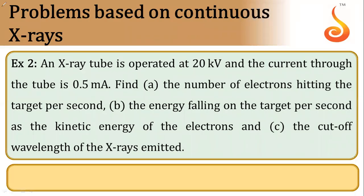Hi, this is example number 2. It is given that an X-ray tube is operated at 20 kiloelectron volt and the current through the tube is given as 0.5 milliampere.